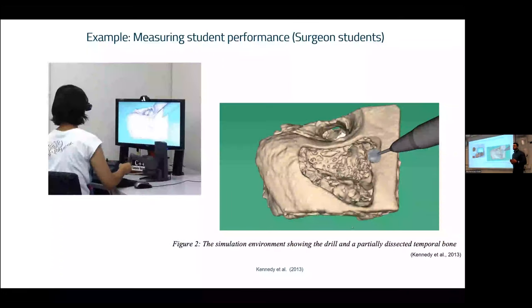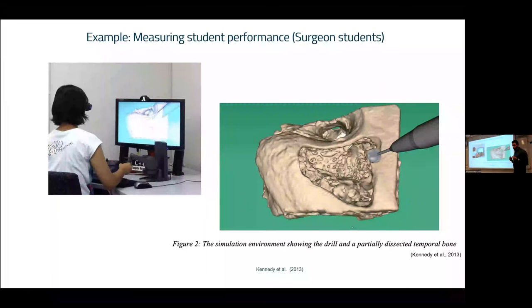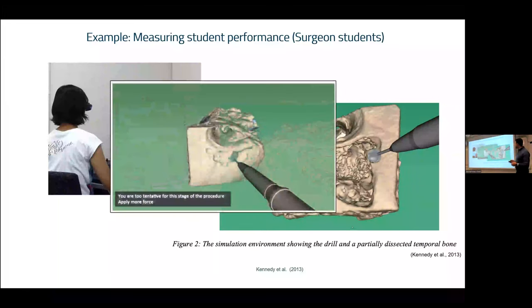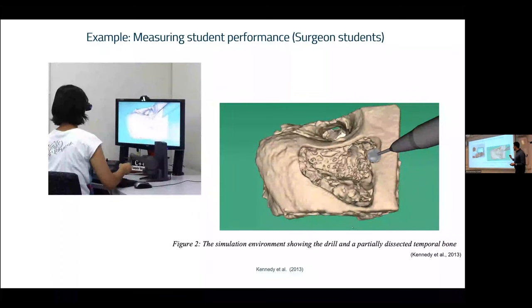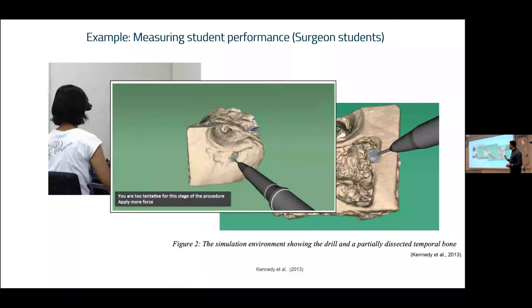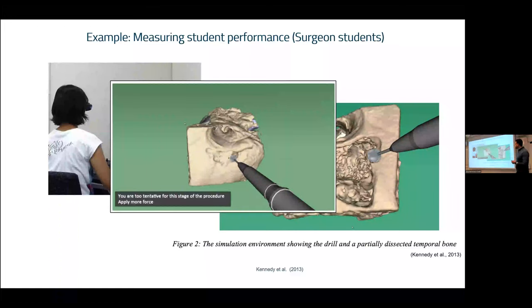This is one of the early examples of learning analytics: a student simulating as a surgeon. They use a haptic pen tool to try to drill the bone, and the system can give feedback. For example, it says: 'You are too tentative for this stage of the procedure. Please apply more force.' That was one of the first examples where learning analytics and data are used to send feedback to students. Instead of having a trainer standing behind the student, the system itself gives instant feedback using the data.